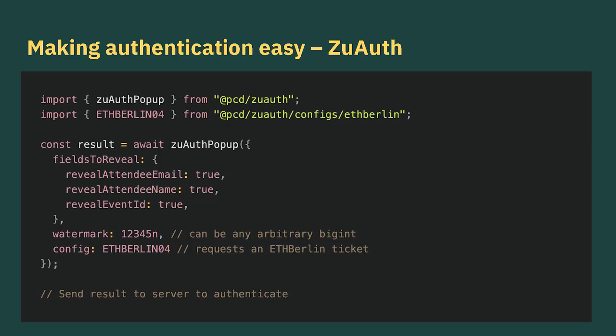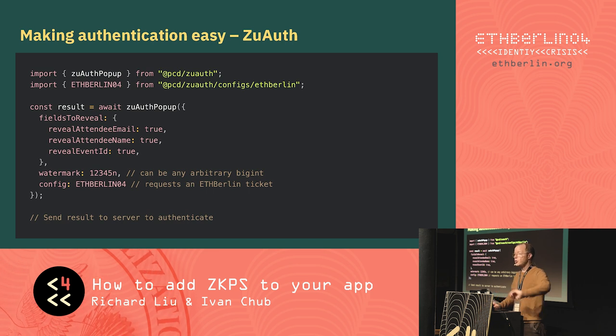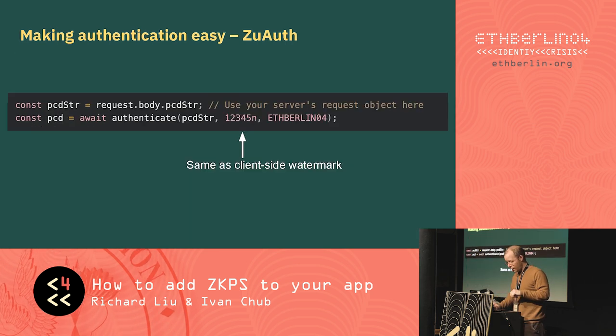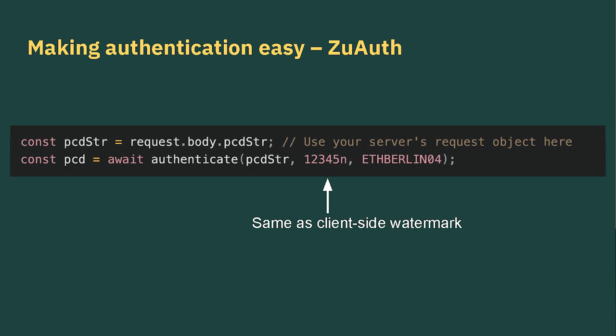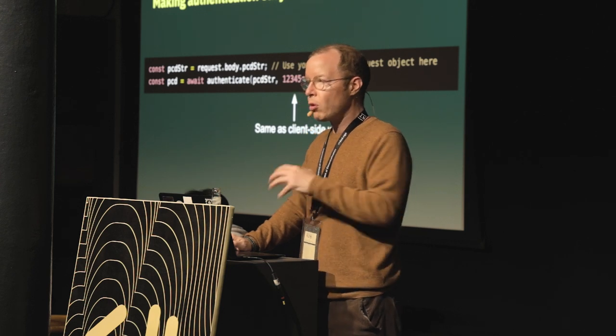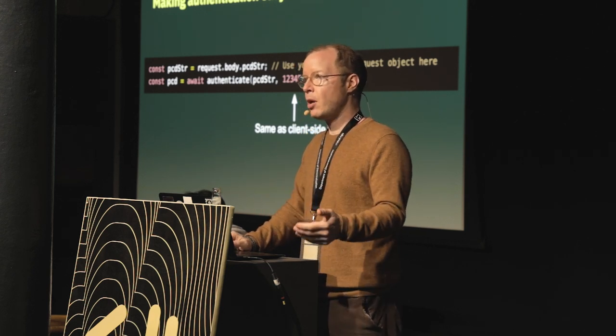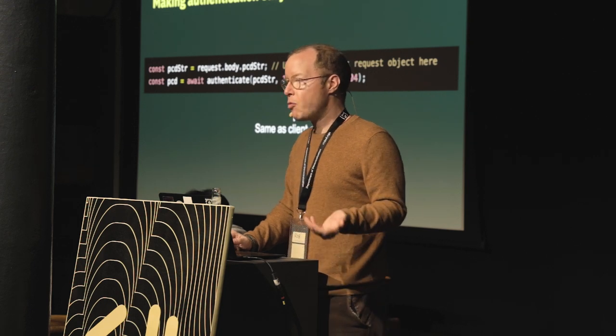Once you have this, you then want to verify that information — probably on the server side. In a web application, you'd take this result and make an API request to your backend. Then you do this, which is even simpler — it's basically a single function call to authenticate. You pass in the result from ZooPass, the watermark (which should be the same as the one used originally when you created the request), and the configuration. The configuration has all the details of the ticket IDs and things that we can match on. That's basically all the code you need to build an app that authenticates somebody as an ETH Berlin ticket holder.